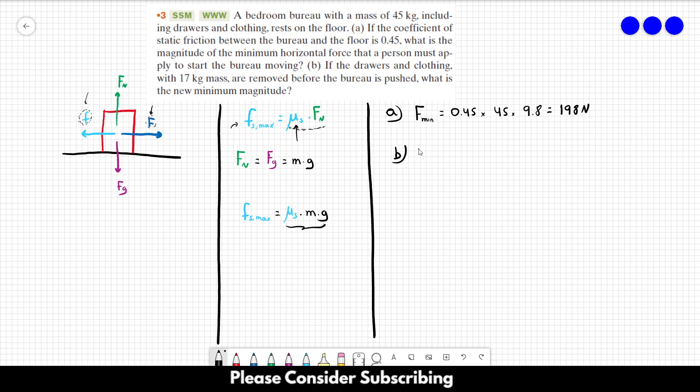For letter B, the only thing that changes is the mass of the bureau. So we just remove 17 kilograms. So it's going to be 0.45 times 45 minus 17 times 9.8.